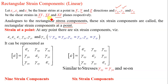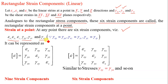To define strain at a point completely, there are 6 strain components: epsilon x, epsilon y, epsilon z (linear components), and gamma xy, gamma yz, gamma xz (shear components). This is because gamma xy equals gamma yx, gamma xz equals gamma zx, and gamma yz equals gamma zy — similar to complementary shear stresses. Hence 9 strain components reduce to 6.